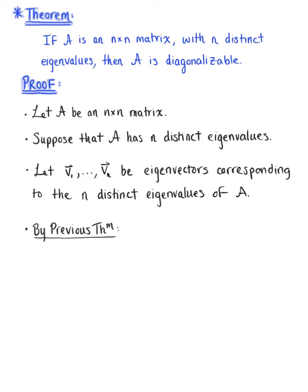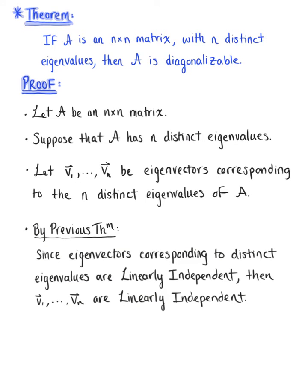By a previous theorem, since eigenvectors corresponding to distinct eigenvalues are linearly independent, then vector v sub 1 through vector v sub n are linearly independent eigenvectors.